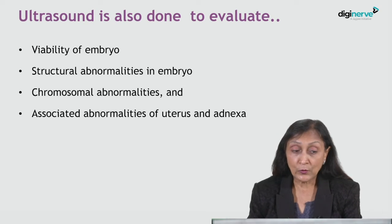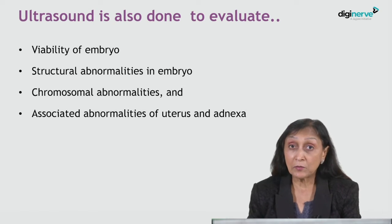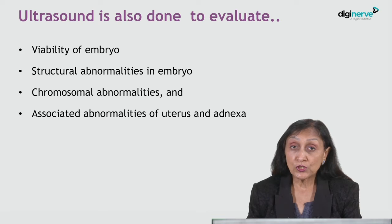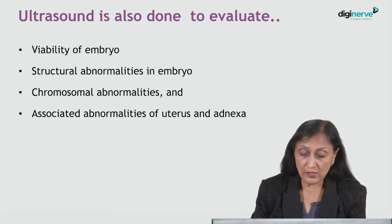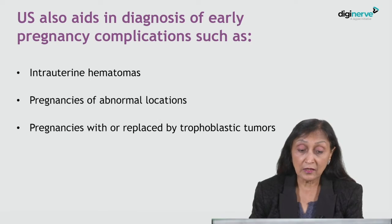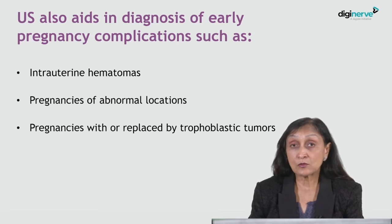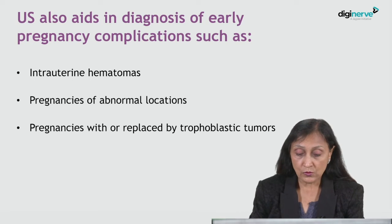Ultrasound is also done to evaluate the viability of the embryo, structural and chromosomal abnormalities in the embryo, and associated abnormalities of the uterus and adnexa. It also aids in the diagnosis of intrauterine hematomas with pregnancy, pregnancies of abnormal locations, as well as trophoblastic tumors which may be present with or without pregnancy.